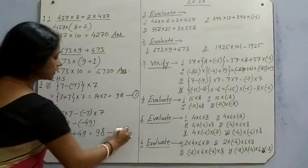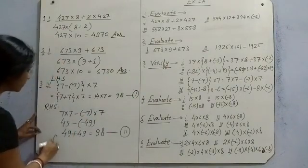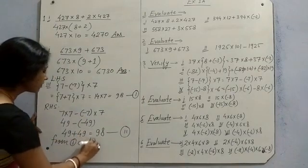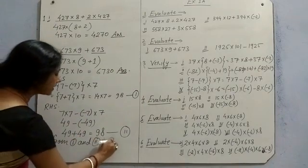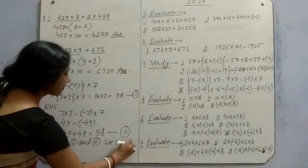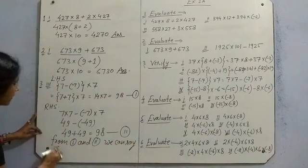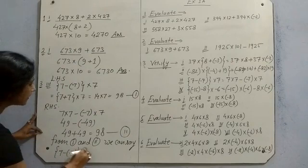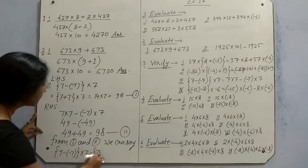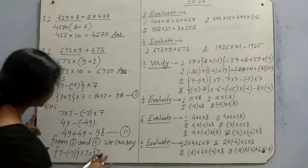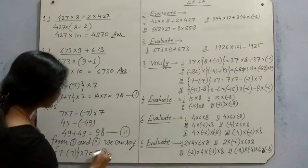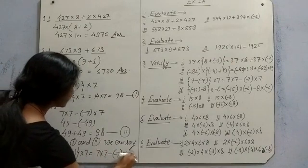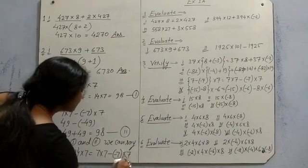So from equation 1, this one is 1, this one is 2. From 1 and 2, we can say 7 minus, minus 7 into 7 is equal to 7 into 7 minus, minus 7 into 7. So this is proved.